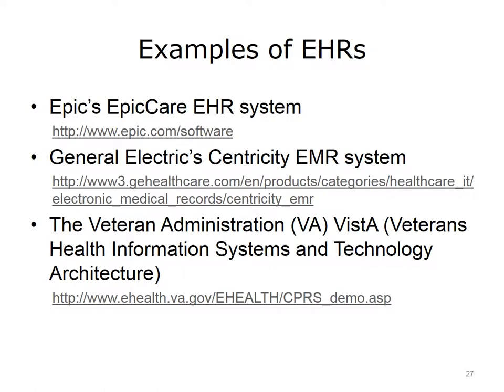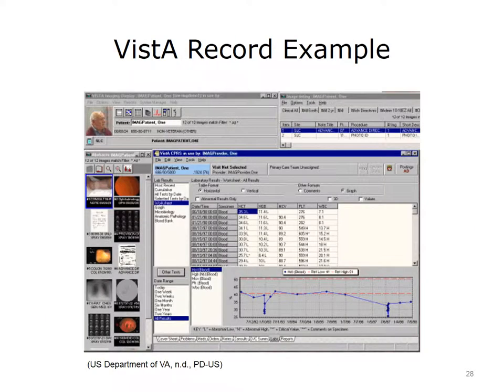Displayed here are some examples of EHRs: Epicare, GE Centricity, and VISTA. Included are URLs you can follow to get more information. VISTA is one of the first healthcare information systems that included an EMR. VISTA stands for Veterans Information Systems and Technology Architecture. VISTA was developed by the U.S. Department of Veterans Affairs and is used by the Veterans Health Administration. This VISTA screenshot shows lab result values graphed over time for a particular patient.